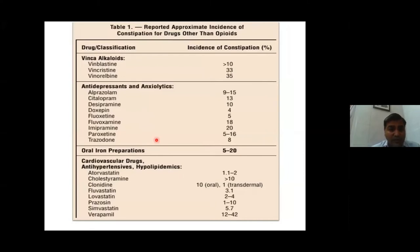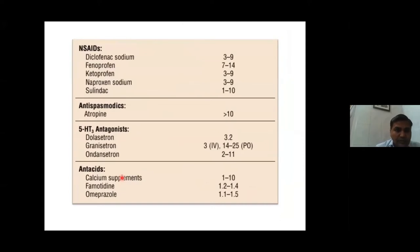Several drugs used in palliative care contribute to constipation: vinca alkaloids as chemotherapeutic agents cause up to 35 percent incidence. Antidepressants and oral iron preparations have about 20 percent incidence. Antihypertensives, cardiovascular drugs, and NSAIDs like diclofenac sodium have 3 to 9 percent incidence. Atropine and ondansetron cause up to 11 percent constipation, and omeprazole and other antacids are also commonly linked.